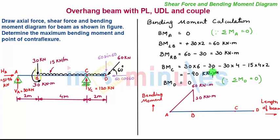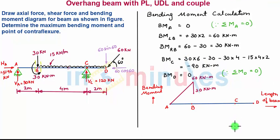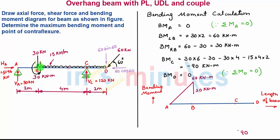Bending moment at C is minus 90 kNm. By taking proper scale we plot minus 90 kNm over point C — since it is below the zero line it is in minus. Between point B and C a uniformly distributed load is acting, so the variation of bending moment will be parabolic.